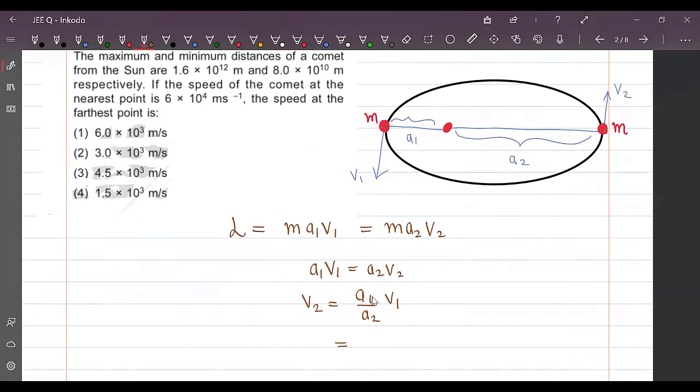So a1 is the closest distance, minimum distance is 8.0 into 10 raised to 10 meter. The farthest distance, that would be 1.6 into 10 raised to 12 meter.